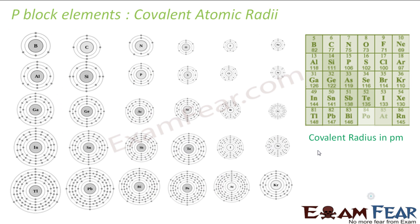If you talk about the covalent atomic radius for P block elements, this is how the trend is. If you go down the group, the atomic radius increases. If you go from left to right, the atomic radius decreases. Why? The nuclear charge increases. More and more charge in the nucleus. These charges will attract these electrons and the atom.